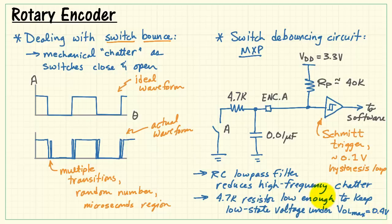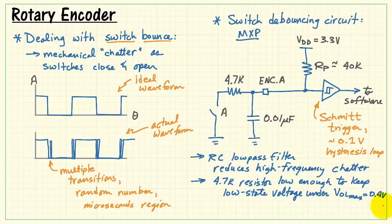The 4.7K resistor is low enough to keep the low-state voltage under the specified VOL max, which is 0.4 volts. That basically says that to be properly interpreted as a low-state voltage, we need to present no more than 0.4 volts to the encoder input.